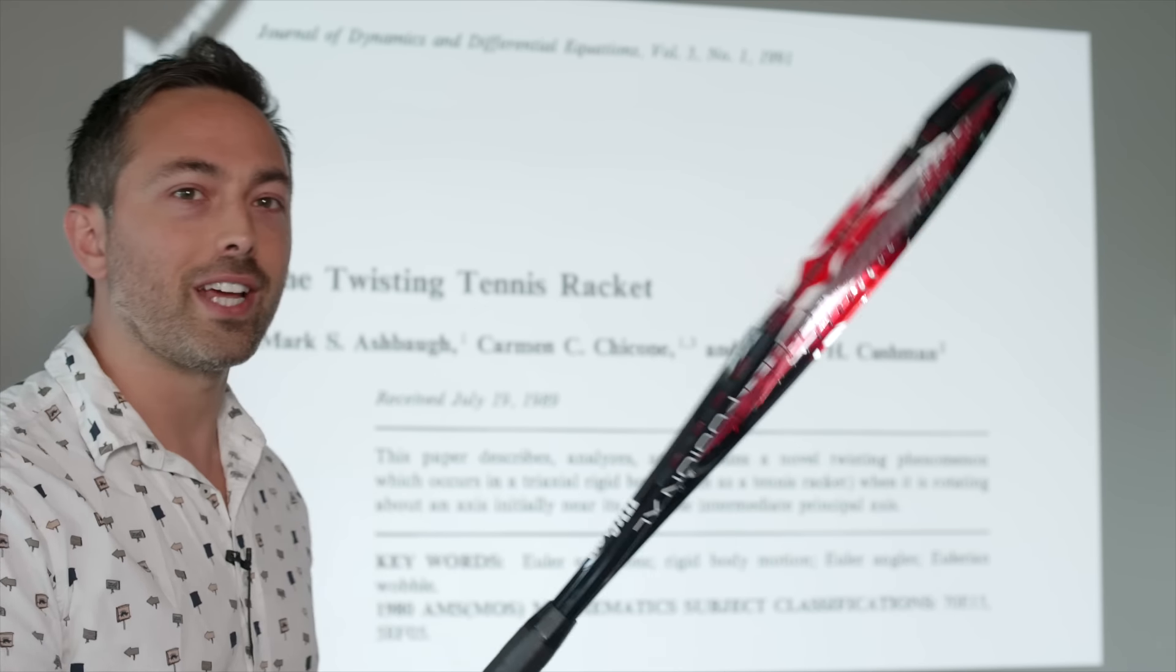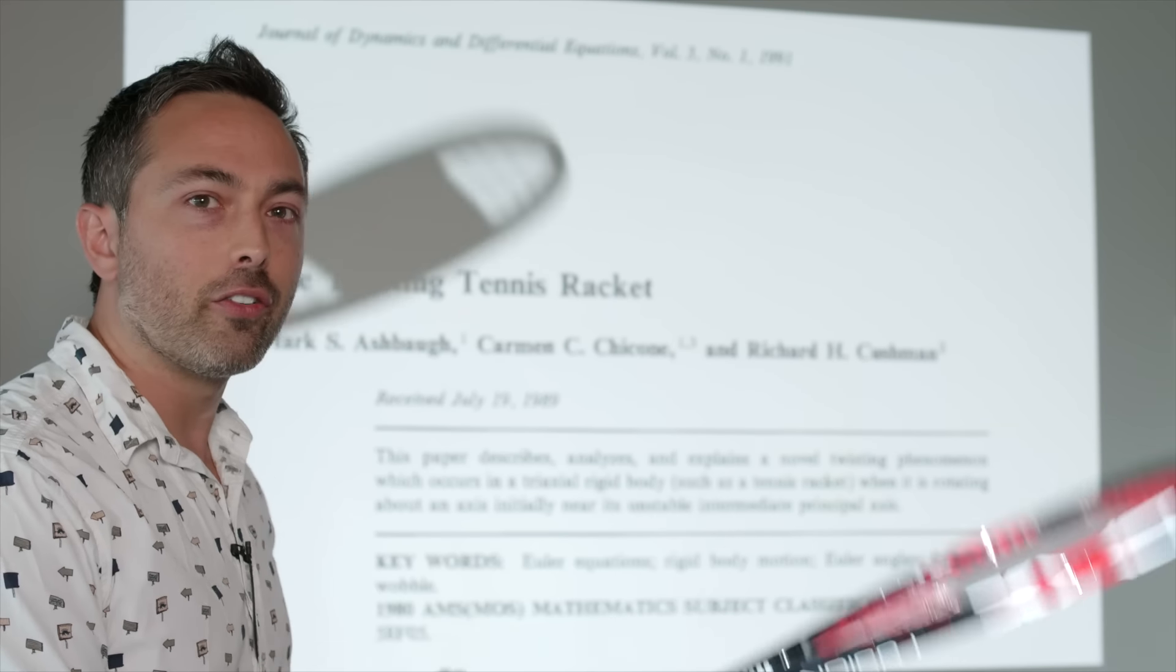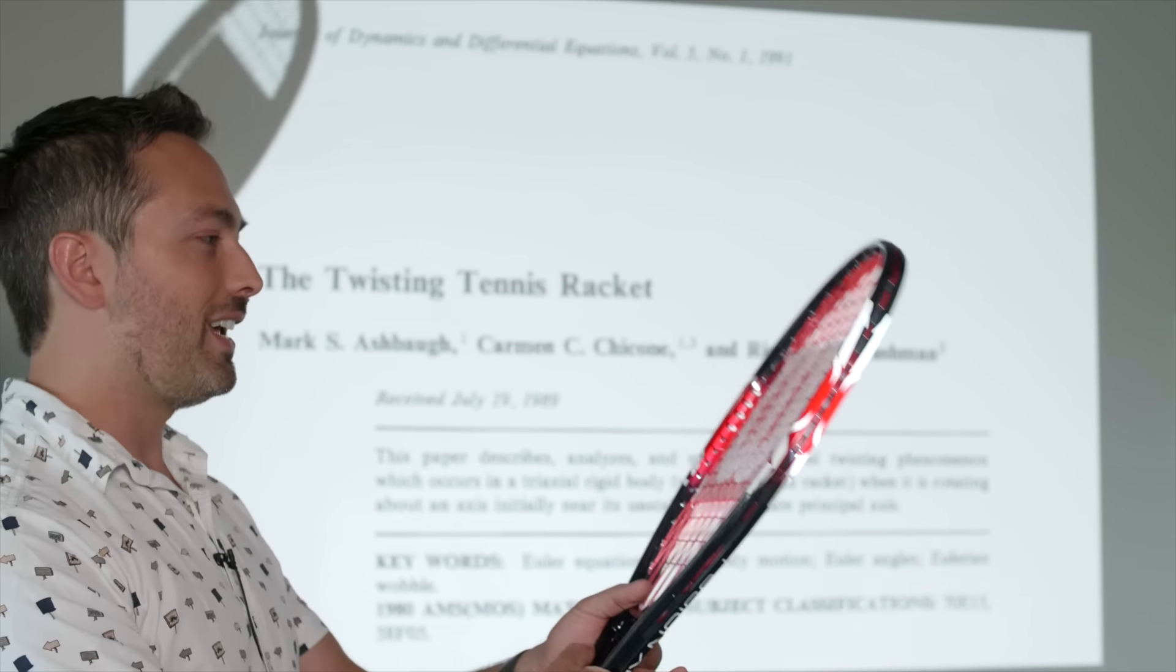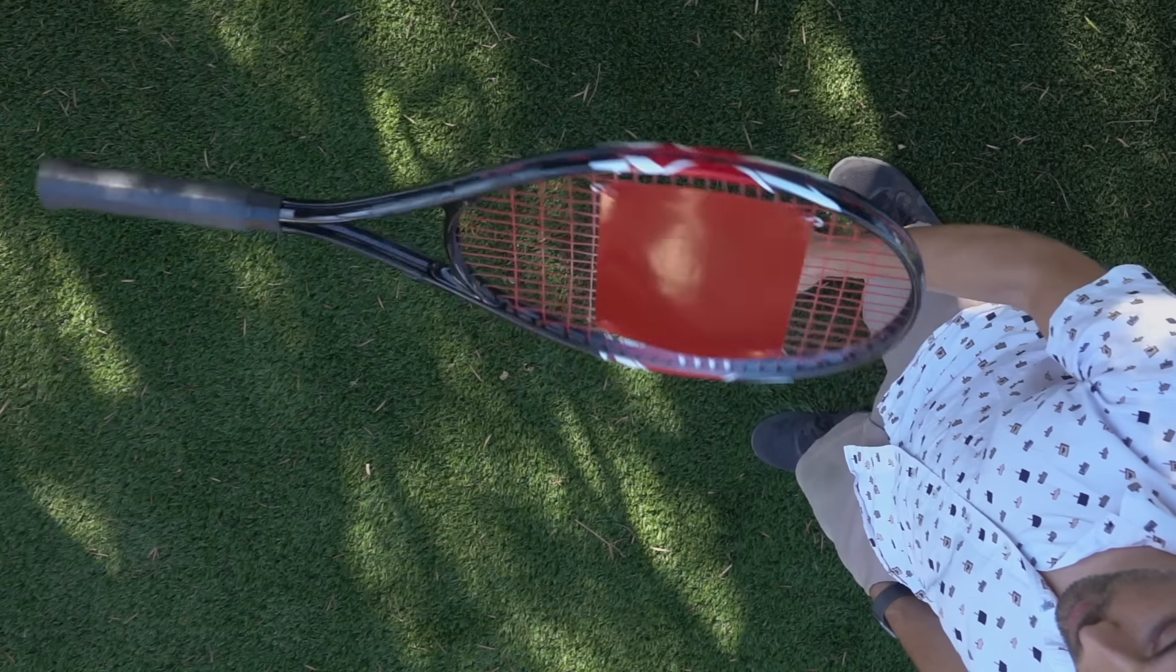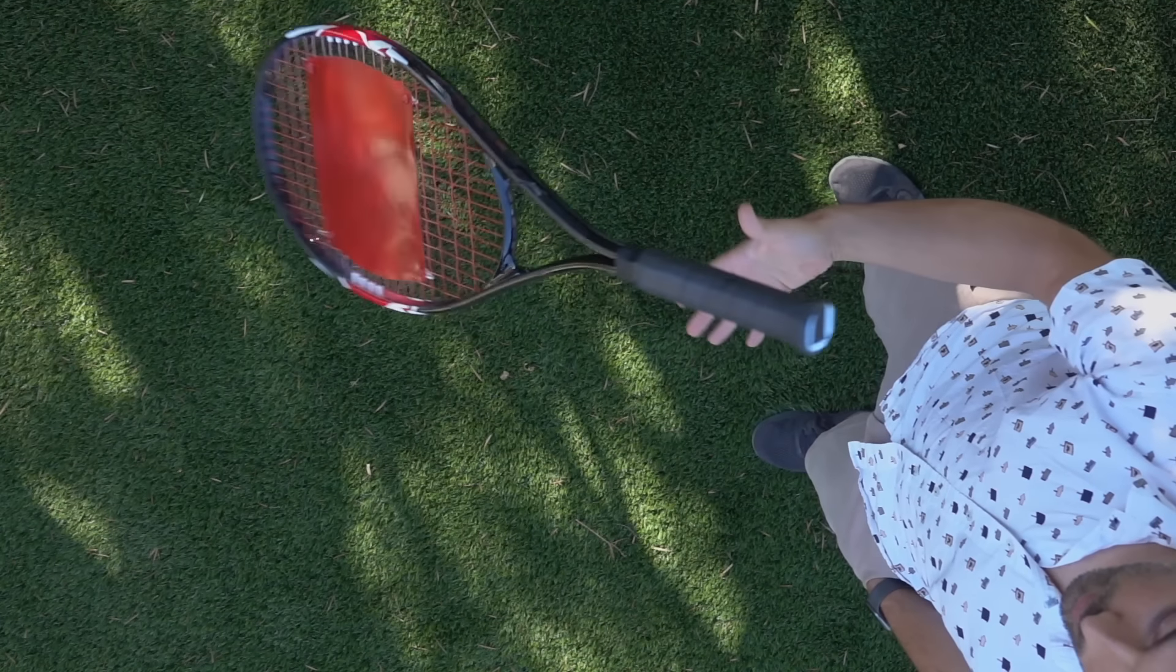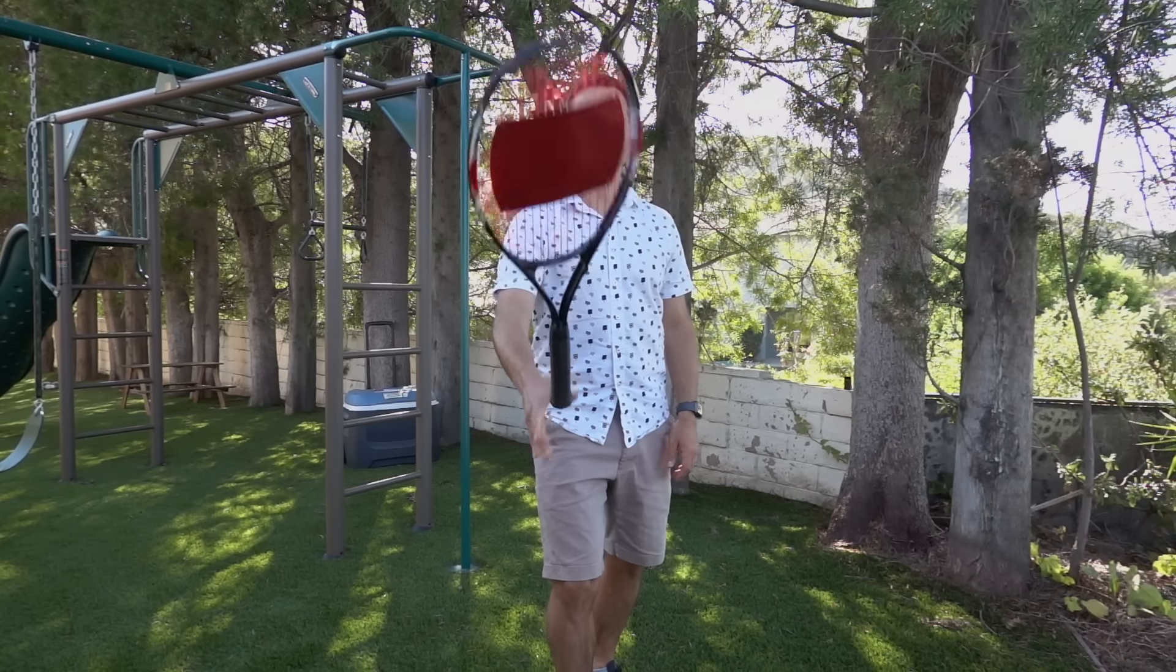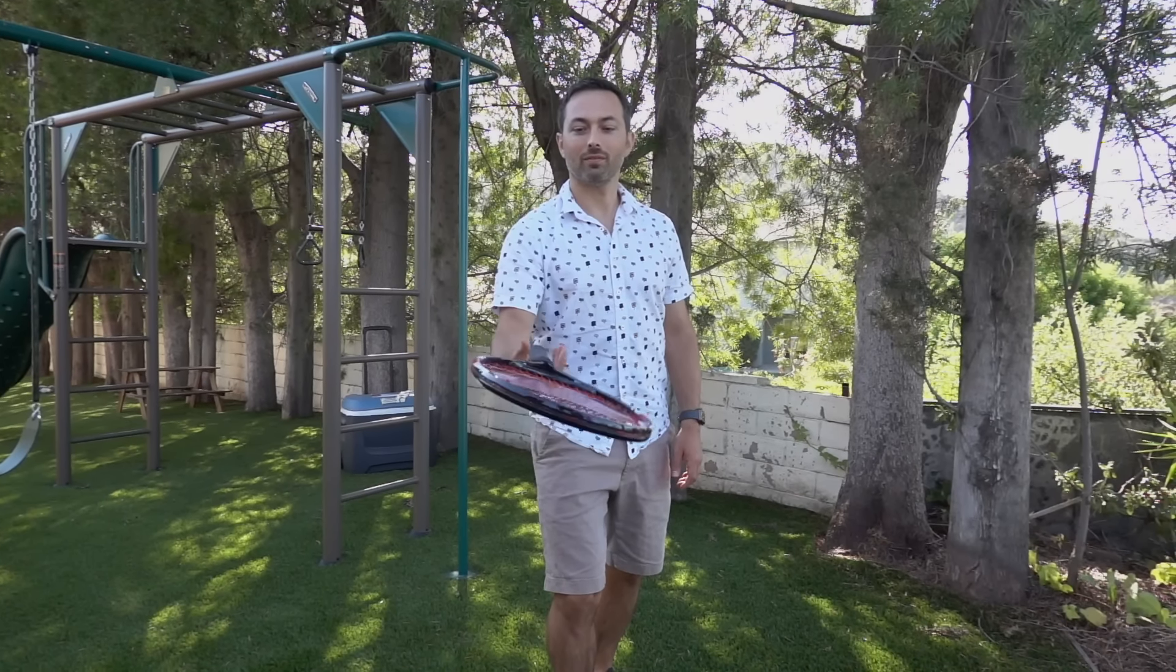The paper says if you hold a tennis racket facing you, and then flip it in the air like this, it not only rotates the way you intend it to, it also makes a half turn around an axis that passes through its handle. So the side that was originally facing you will be facing away when you catch it.